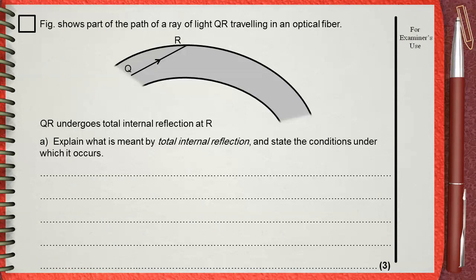Figure shows part of the path of a ray of light QR traveling in an optical fiber. QR undergoes total internal reflection at R. Part A: Explain what's meant by total internal reflection and state the conditions under which it occurs.